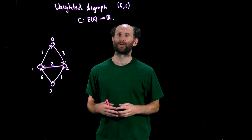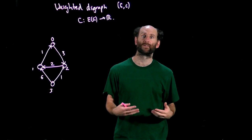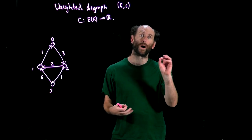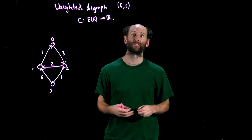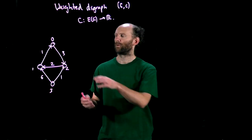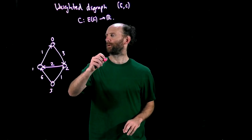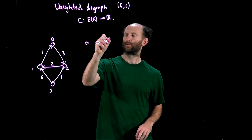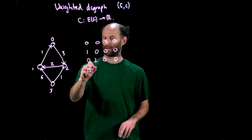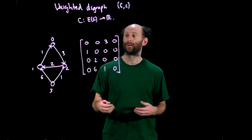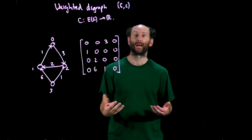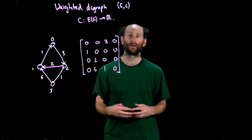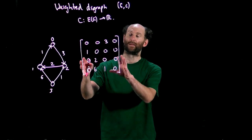Now to represent these weighted digraphs in a computer we'll need to modify our data structures so they can represent the weight information. For adjacency matrices this is easy instead of putting one in an adjacency matrix to represent the presence of an arc we'll put the value of C there. For example here the first row of the adjacency matrix has zero zero three zero the second row has zero. We'll need to be careful when zero happens to be a legal weight for an arc and in that case we may need to use null or infinity to represent the absence of an arc.